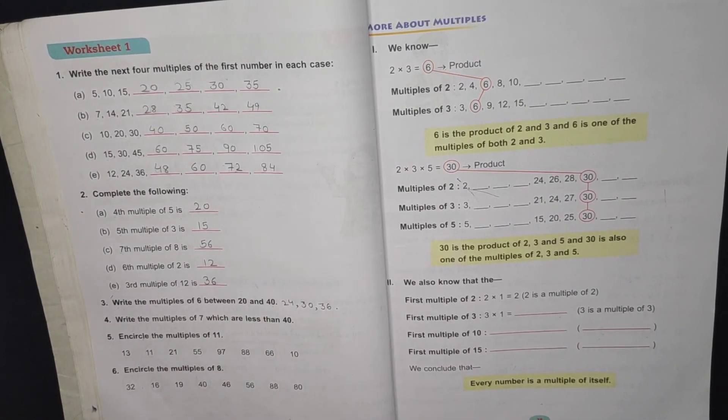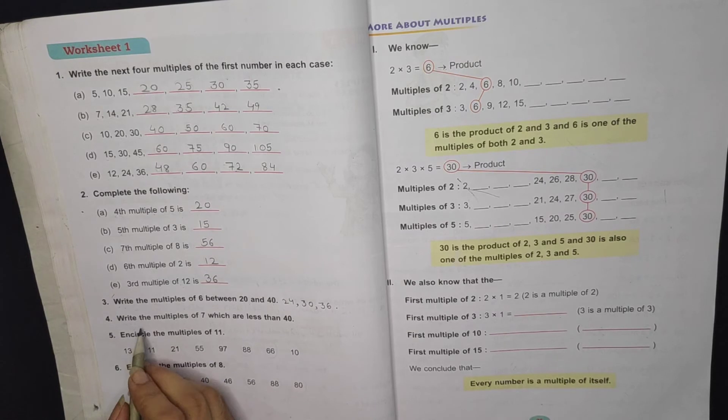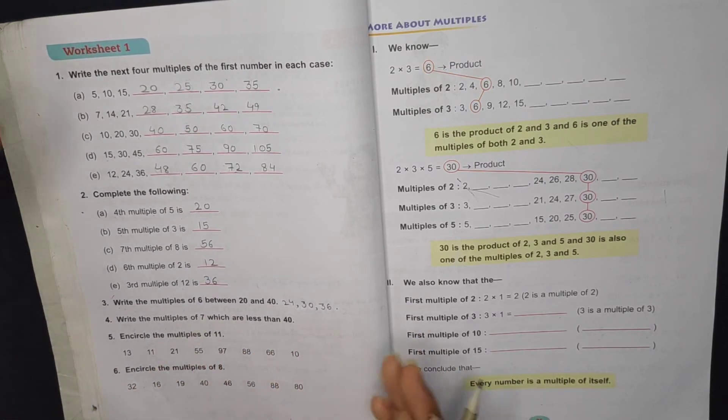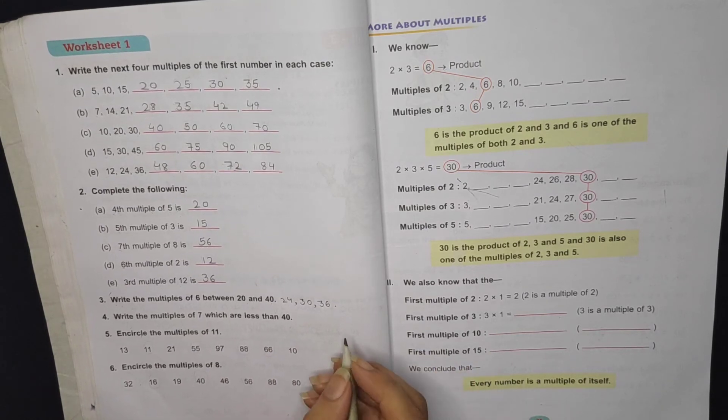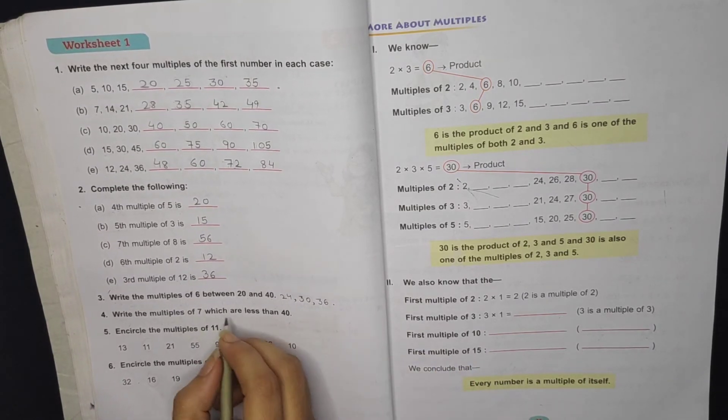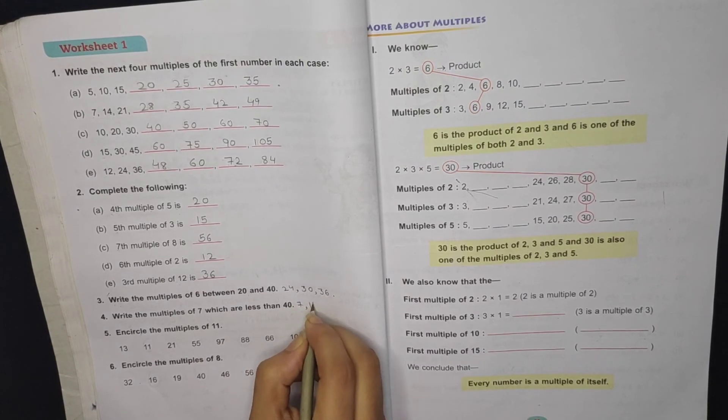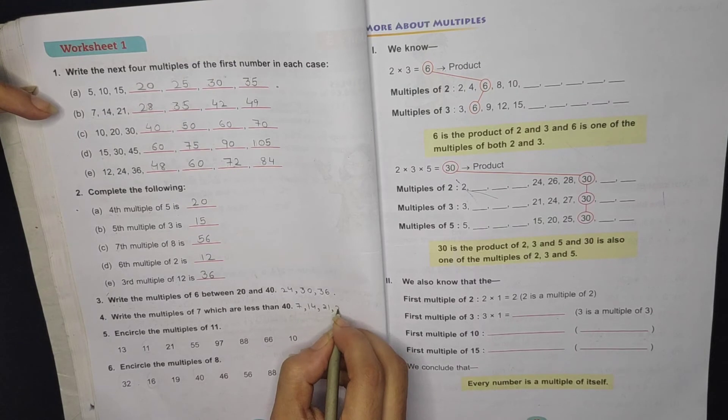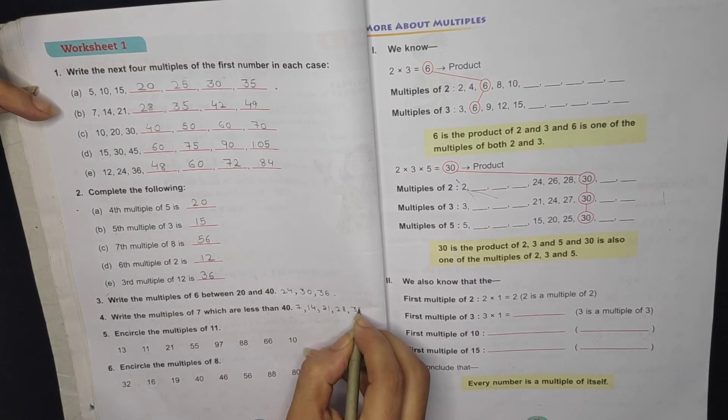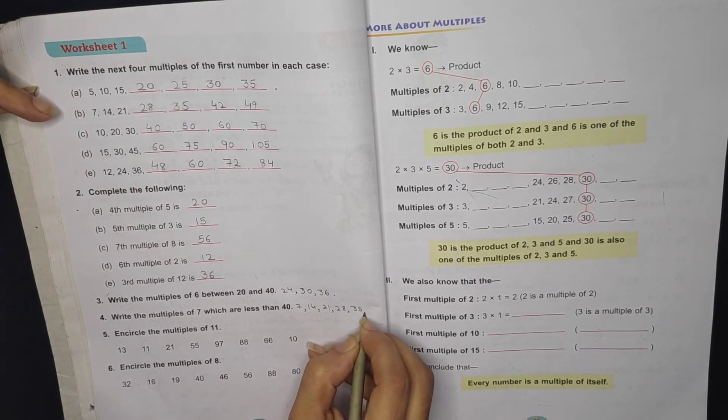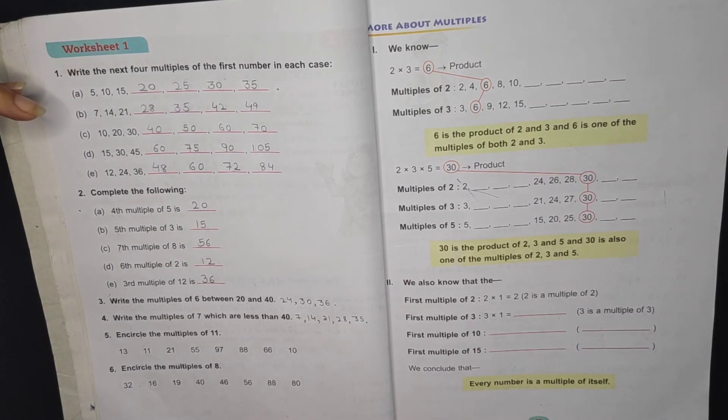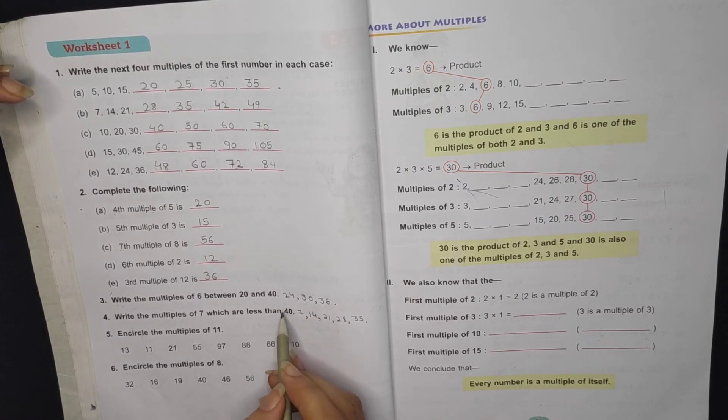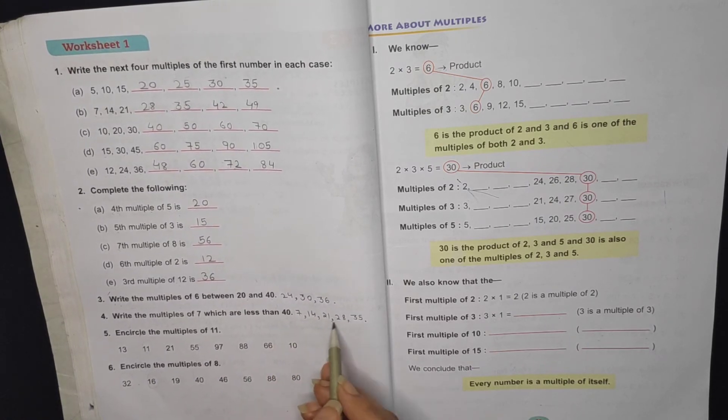Next, write the multiples of 7 less than 40. That means we will write all multiples starting from 7. 1 times 7 is 7, 2 times 7 is 14, 3 times is 21, 4 times 7 is 28, then 5 times 7 is 35, 6 times is 42. 42 is bigger than 40, so we have to write those less than 40.